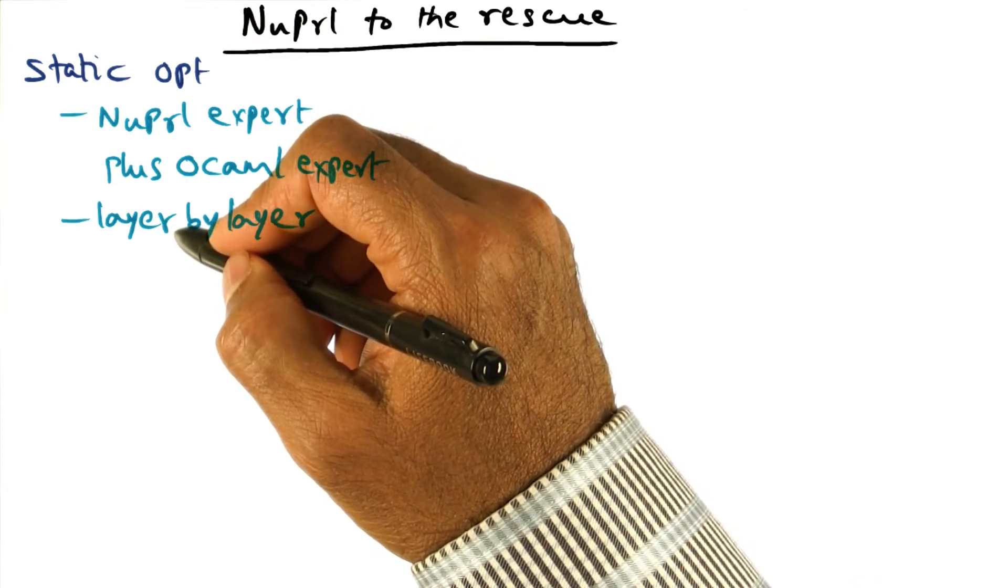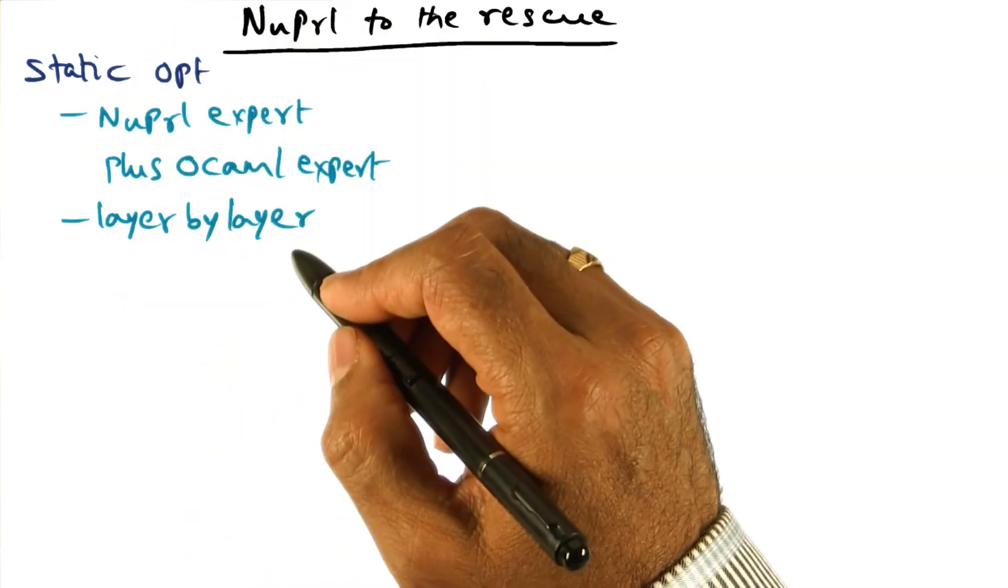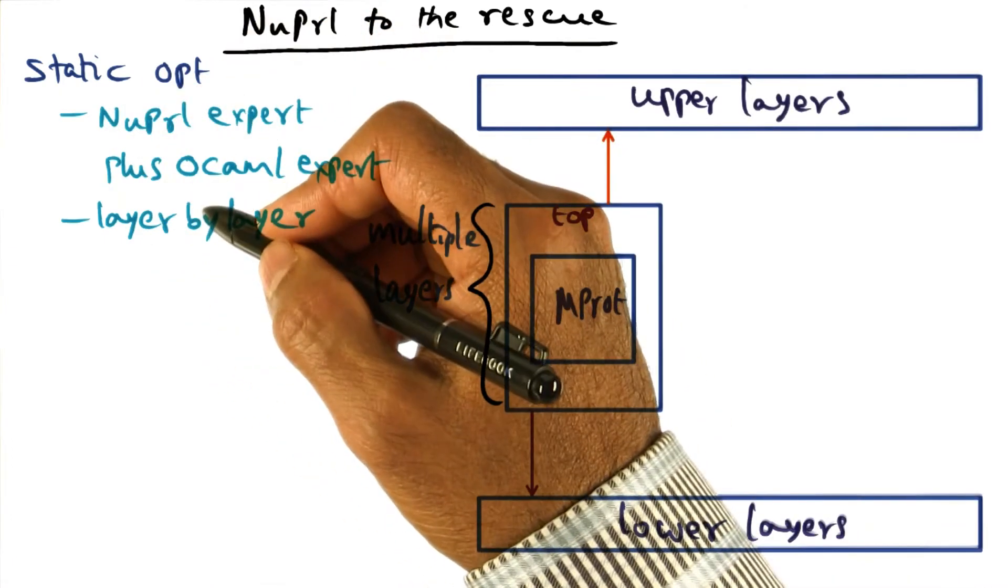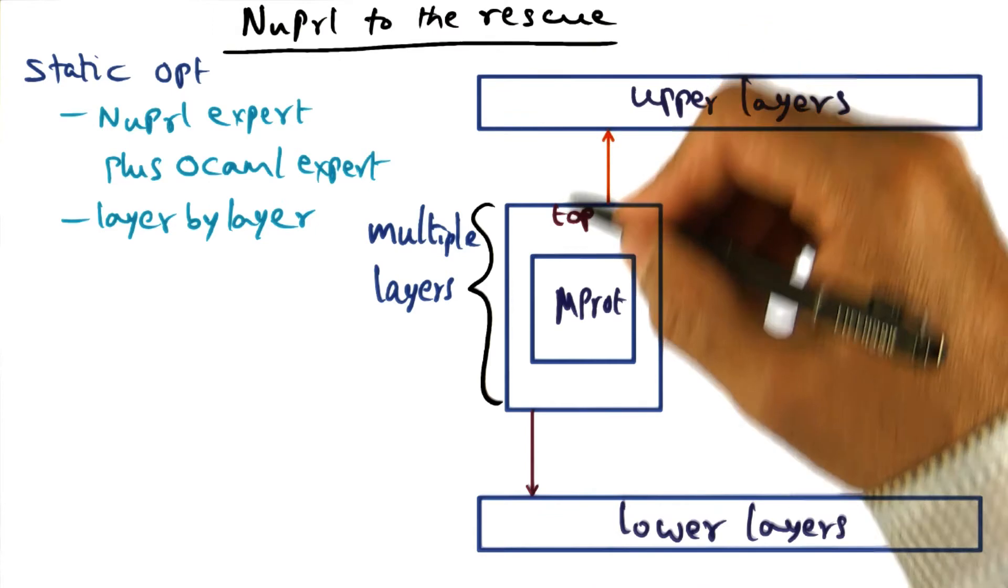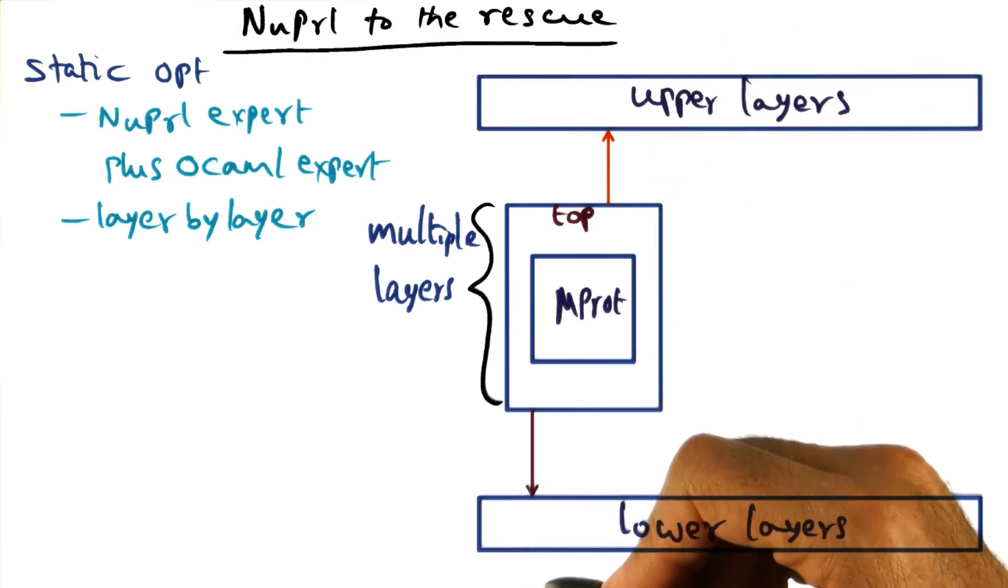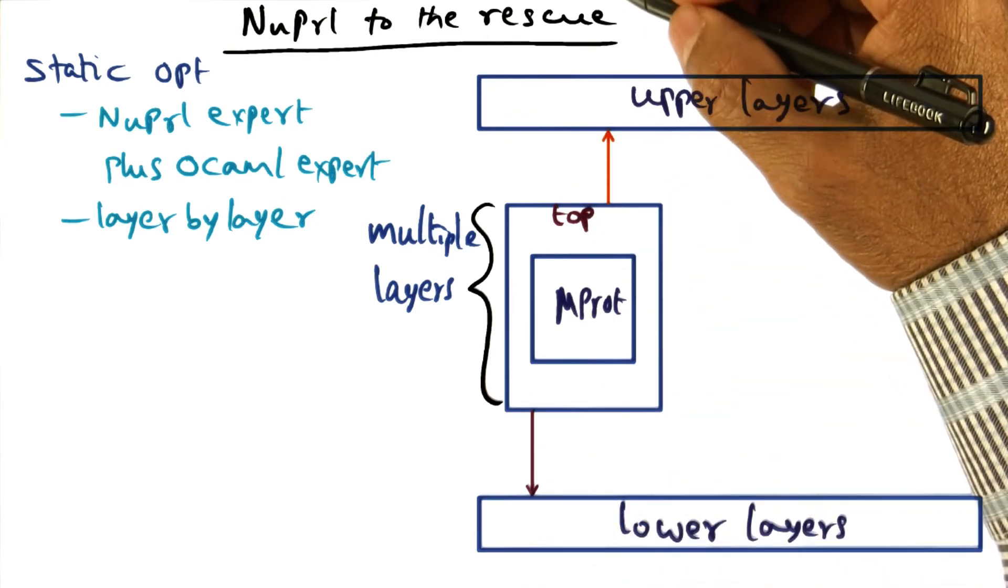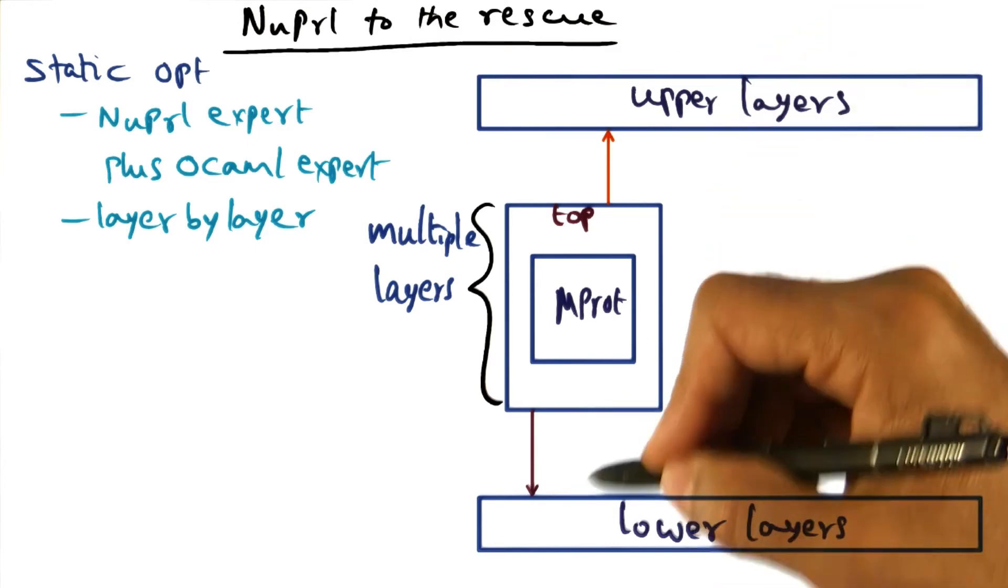Remember we're not going across layers, but every layer we're doing the static optimization. This is good, but unfortunately that's not enough, because we have lots of layers between a message arriving and the application getting that message, or vice versa.